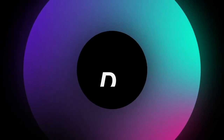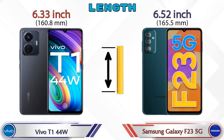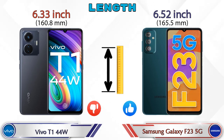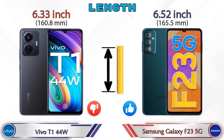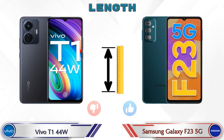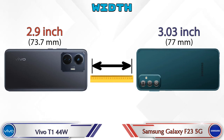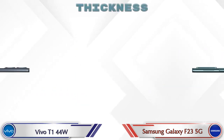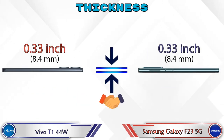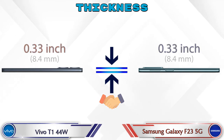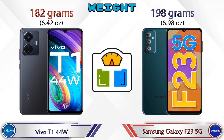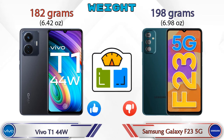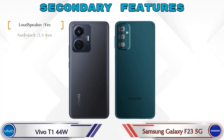Now let's check the details about dimensions. Length: T1 44W is 6.33 inches and Galaxy F23 5G is 6.52 inches. Width: T1 44W is 2.9 inches and Galaxy F23 5G is 3.03 inches. Both phones have the same thickness of 0.33 inches. Talking about weight: T1 44W is 182 grams and Galaxy F23 5G is 198 grams, which is heavier than the T1 44W.